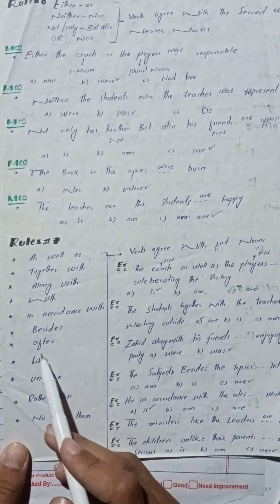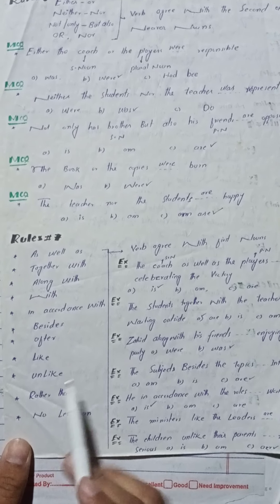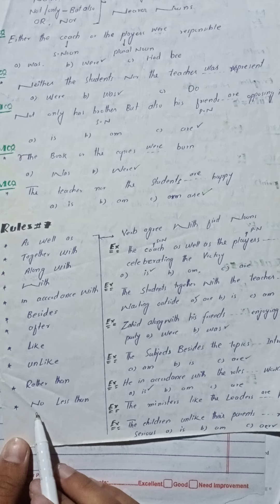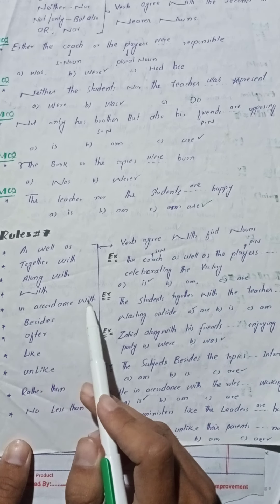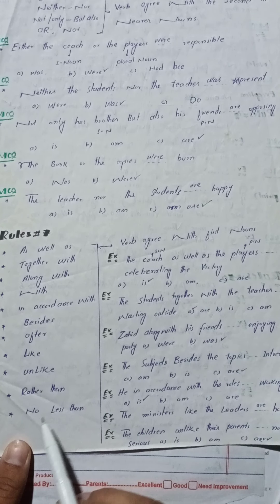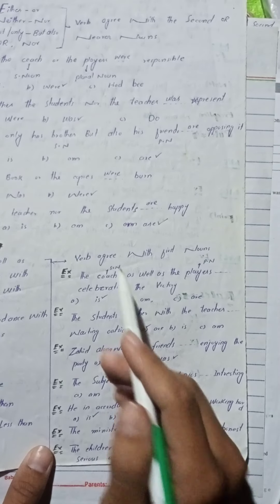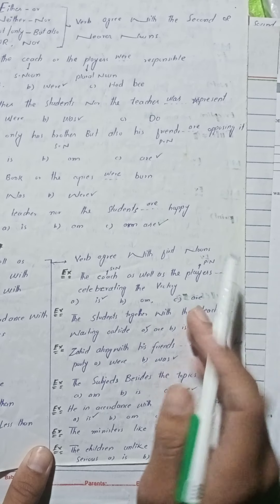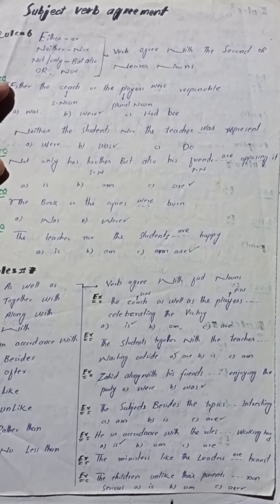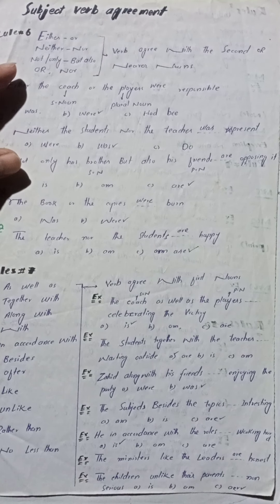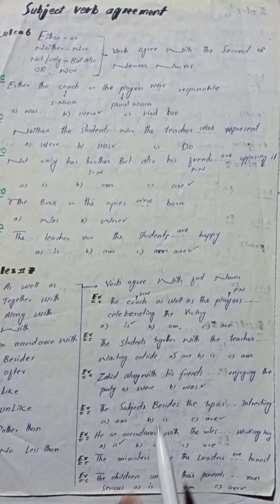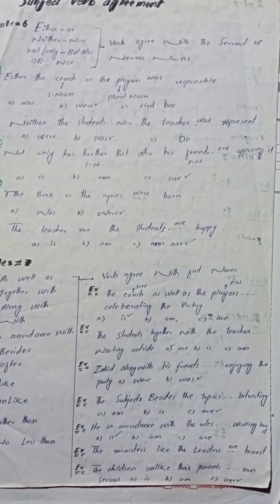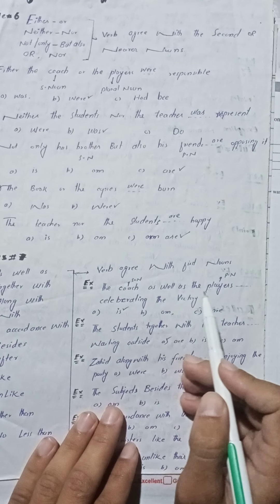Rule number seven: اگر یہ phrases آئیں — as well as, together with, along with, with, in accordance with, beside, after, like, unlike, rather than, not, no less than — تو verb، first noun کے ساتھ agree کرے گی۔ Rule six میں verb second noun کے ساتھ agree کرتی تھی، جبکہ rule seven میں verb first noun کے ساتھ agree کرتی ہے۔